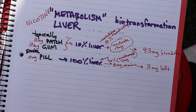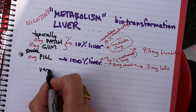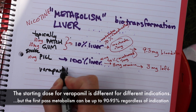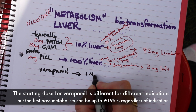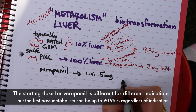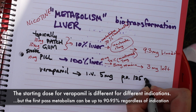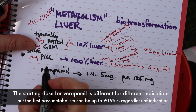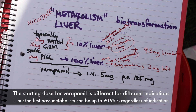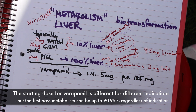Another example is verapamil. The IV dose is 5 milligrams, while the PO dose is 125 milligrams — 25 times more — because the liver biotransforms or metabolizes verapamil at an even higher rate than nicotine.